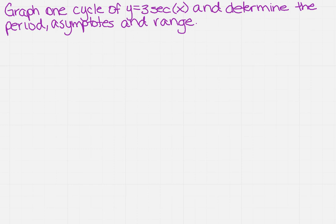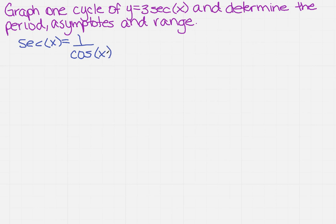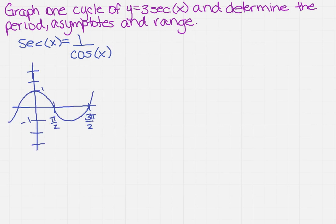Remember, we know that the secant of x is equal to 1 over cosine of x. If we know that, we can draw cosine x as our base function. So I want you to do that first, then come back and check the video. Based on what we know about the cosine of x, it should resemble what I've drawn here on this graph.